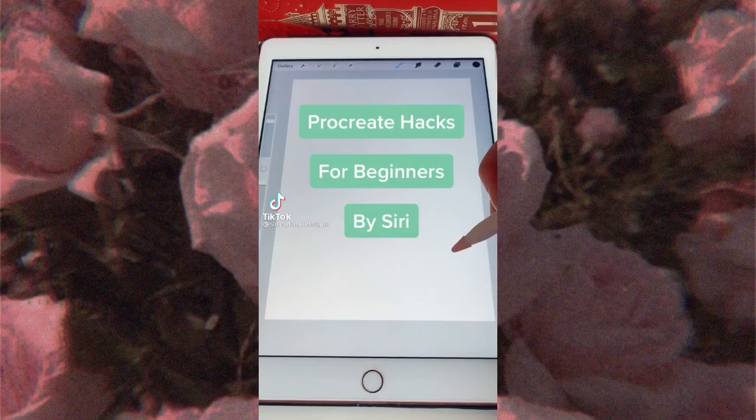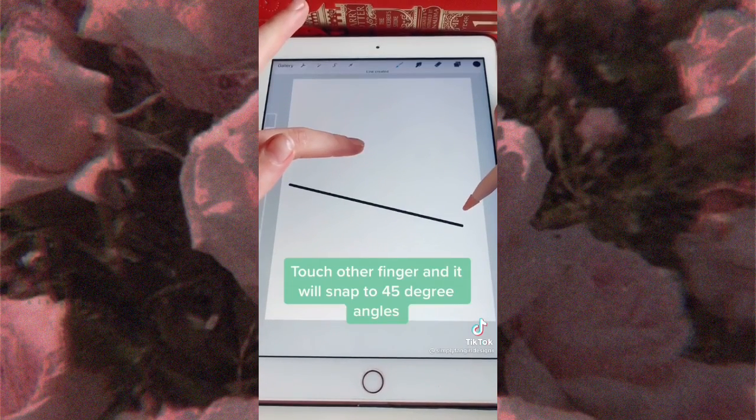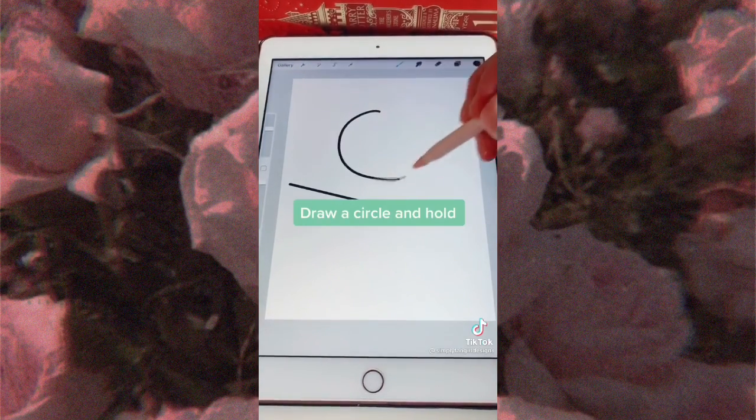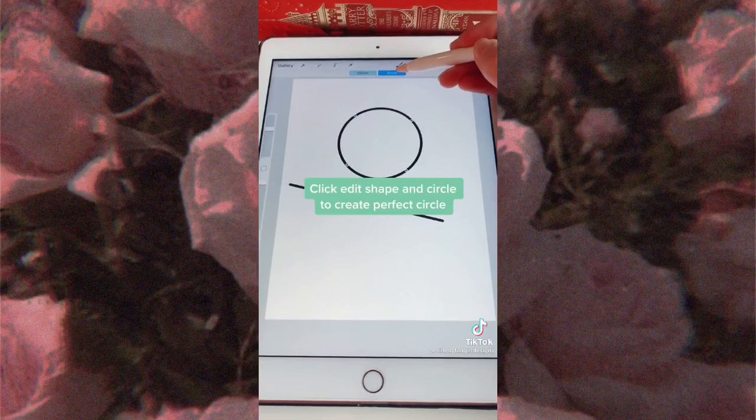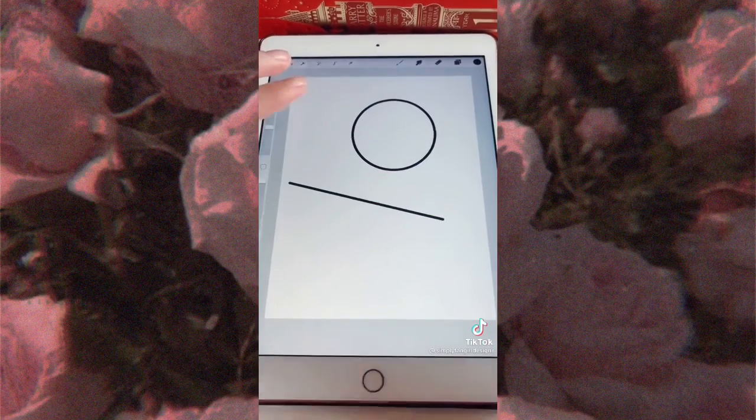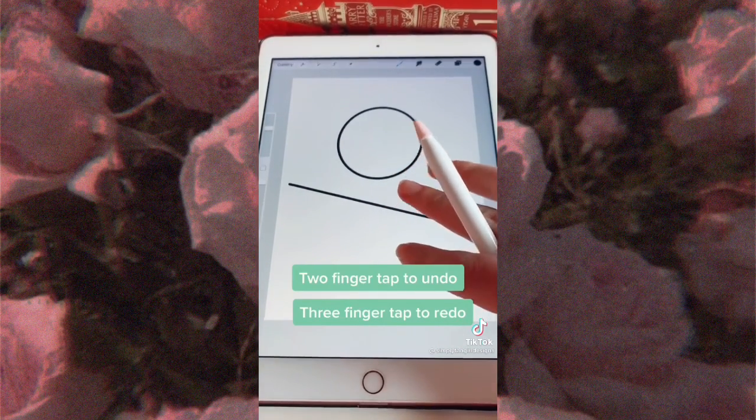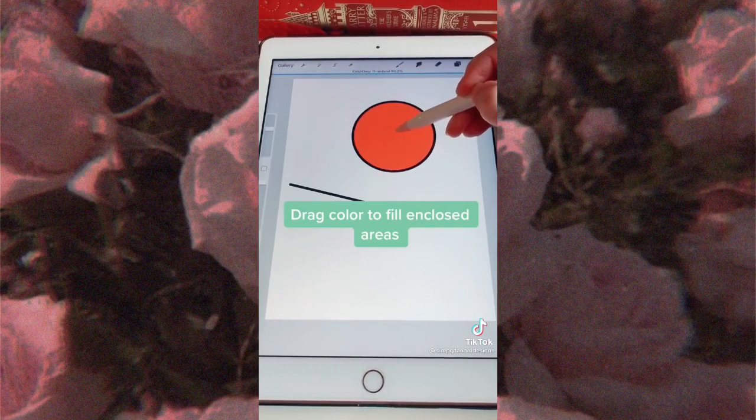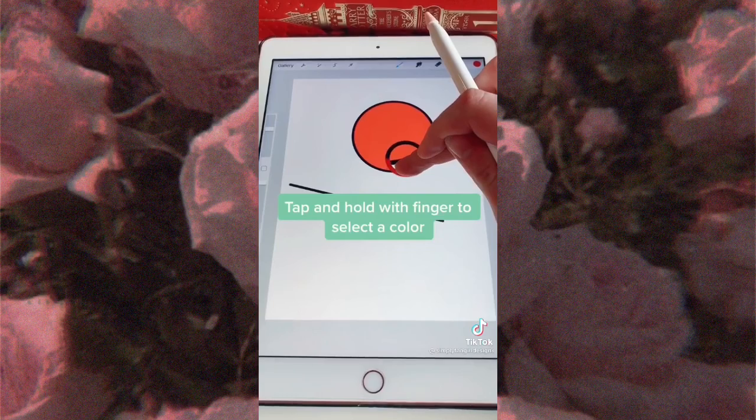Procreate hacks for beginners series: Draw a line and hold pencil down and it will straighten. Touch other finger and it will snap to 45 degree angle. Draw a circle and hold, click edit shape and circle to create perfect circle. Two finger tap to undo, three finger tap to redo. Drag color to fill in closed areas. Tap and hold with finger to select a color.